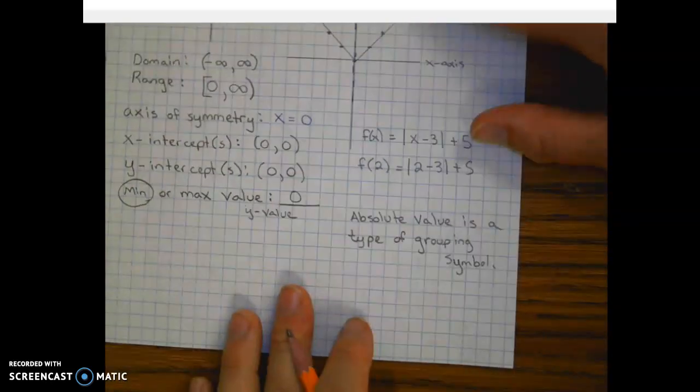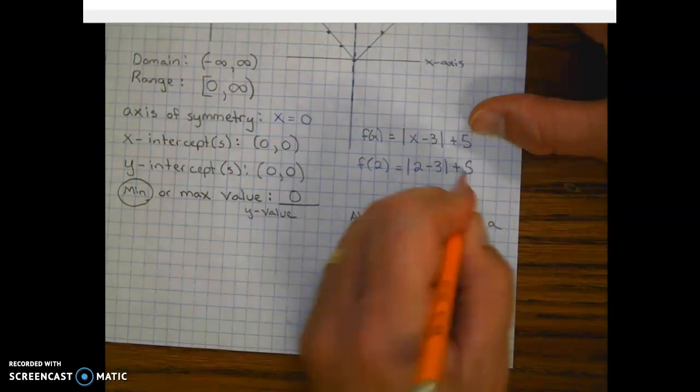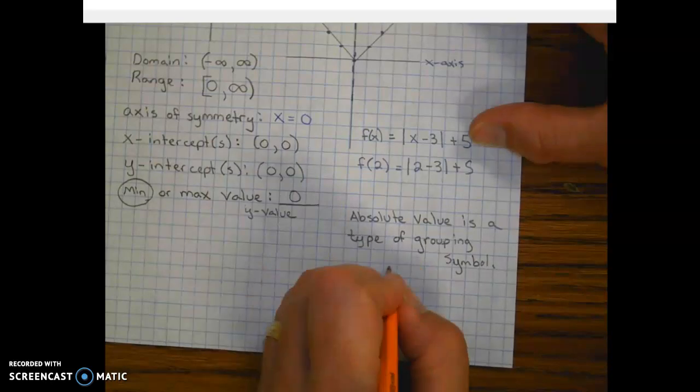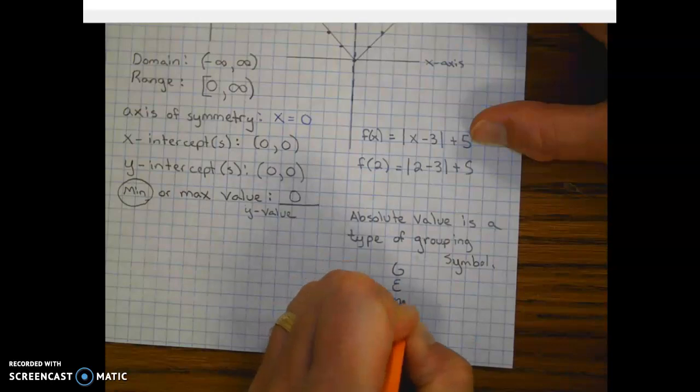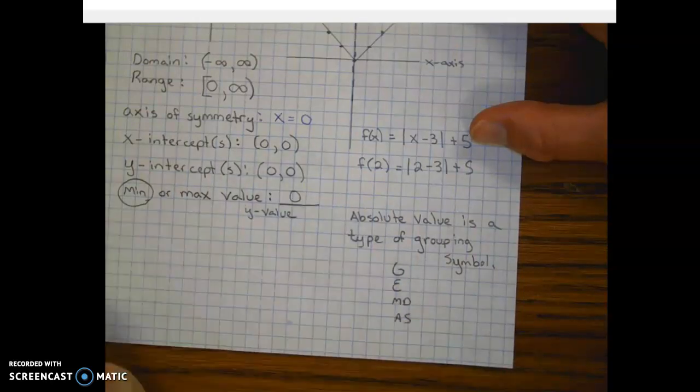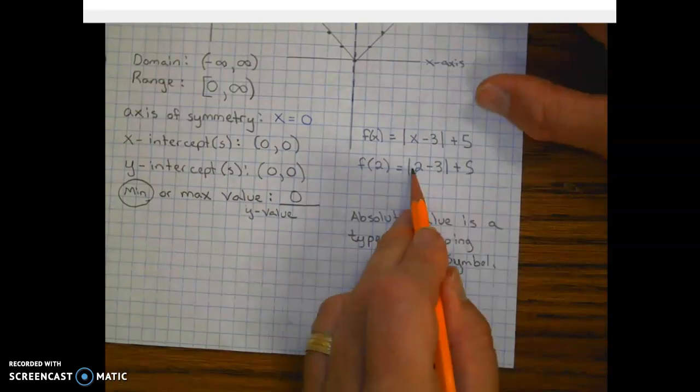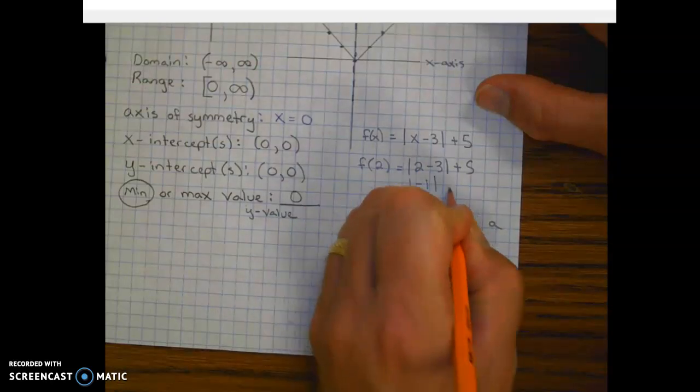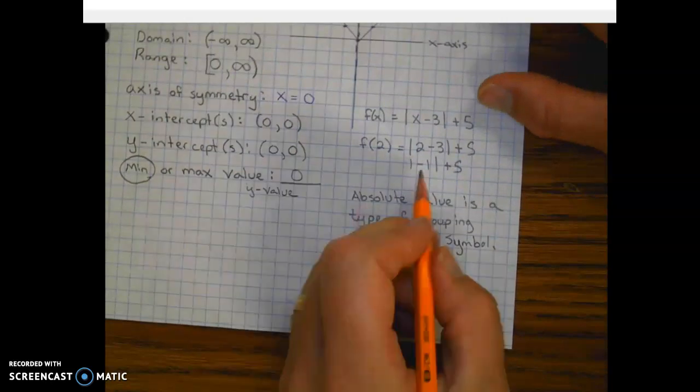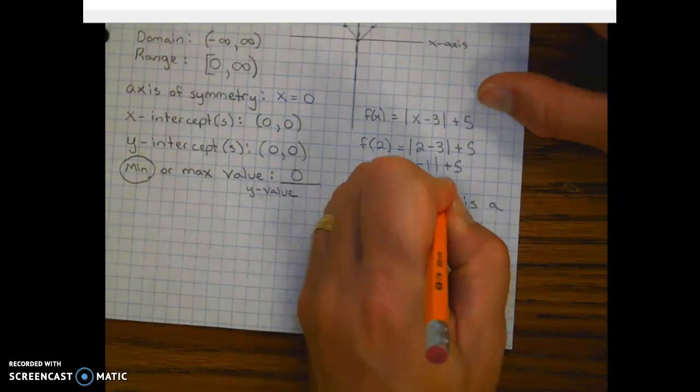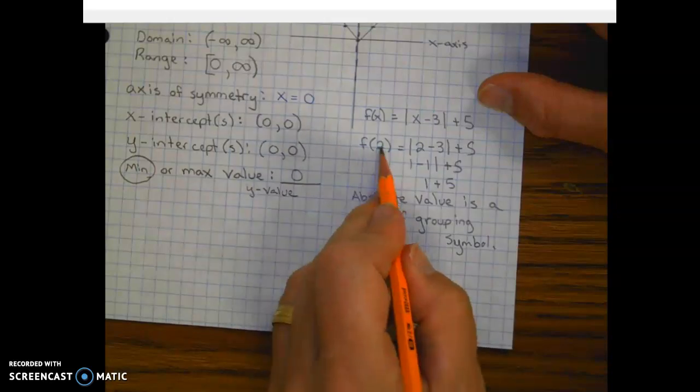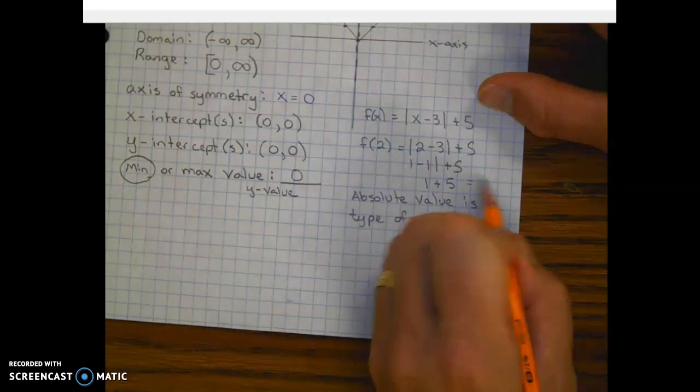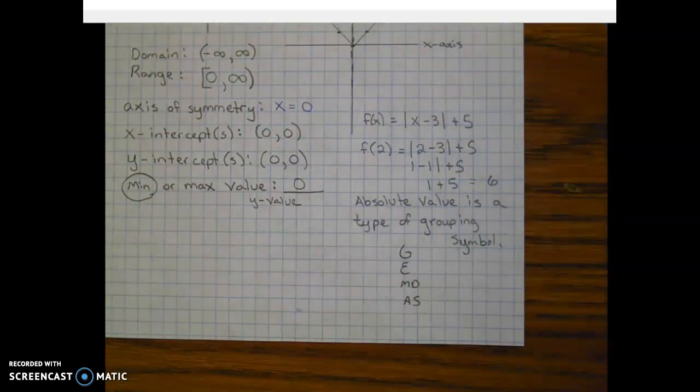That's important to know, because remember, when we're simplifying, or even when we're solving, we use GEMDOS: grouping symbol first, then exponents, multiplying and dividing from left to right, adding and subtracting from left to right. So when we evaluate this, we have to do what's inside the grouping symbol first. So we would get the absolute value of negative 1. And then the absolute value of negative 1 is 1. And so f of 2 would be equal to 6. All right, now I'll stop there. I'll see you guys tomorrow in class.